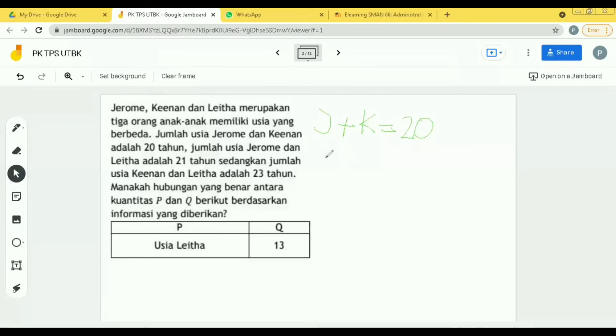Informasi yang kedua apa? Jerome Laita. Berarti J ditambah L sama dengan 21. Informasi berikutnya? Kinan sama dengan Laita. Oke, sama dengan 23.